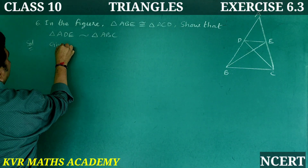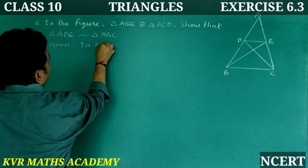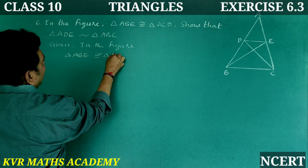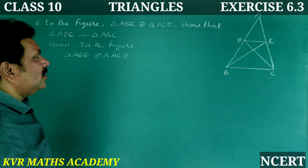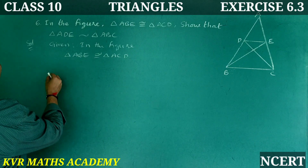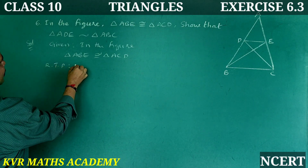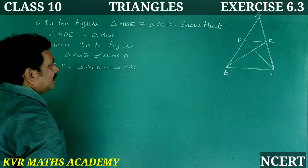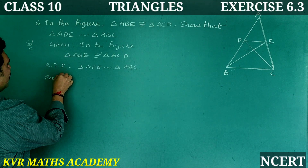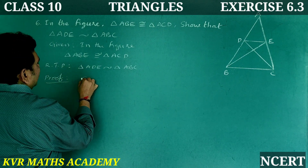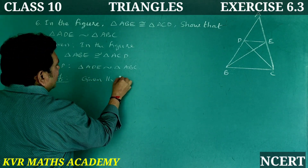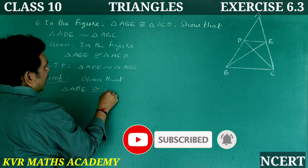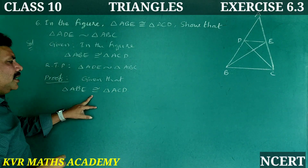Solution. Given in the figure: triangle ABE is congruent to triangle ACD. RTP: triangle ADE is similar to triangle ABC. Now, prove. Given that triangle ABE is congruent to triangle ACD. If two triangles are congruent, their corresponding parts are equal.